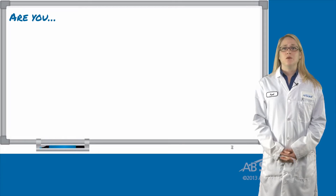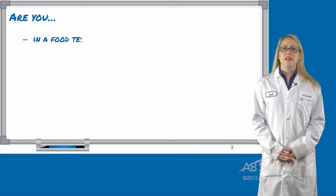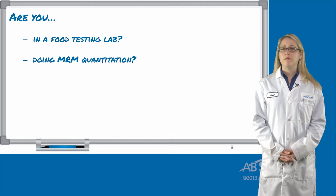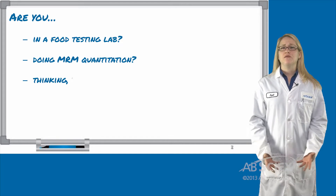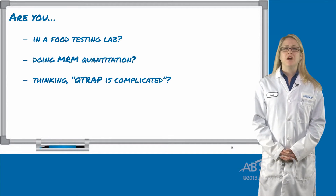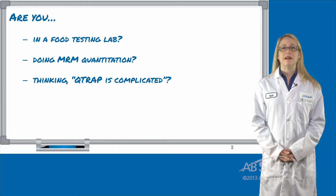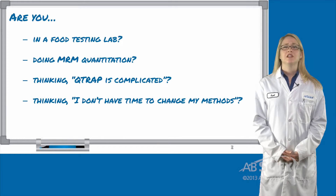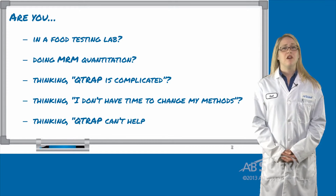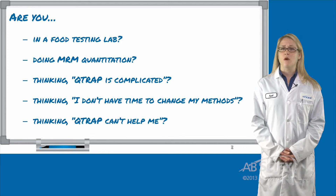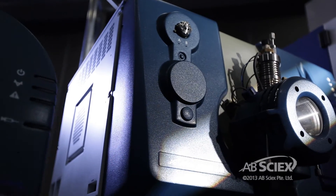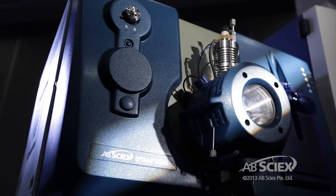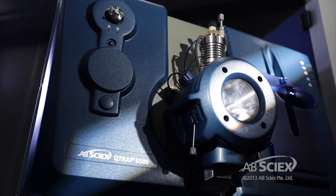Think about some of these questions. Are you in a food testing lab? Do you have a Q-TRAP or triple quad mass spec system and use it primarily to do MRM quantitation? Do you feel that a Q-TRAP system is much more complicated than a regular triple quad mass spec system and you just don't have the time to set up or change your current methods? Do you think that the Q-TRAP features do not offer any benefit to your routine quantitation methods? If you answered yes to any of these, then the information we want to share with you in this video series will change the way you look at a Q-TRAP mass spec system.